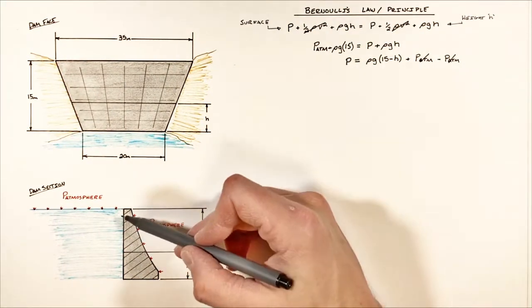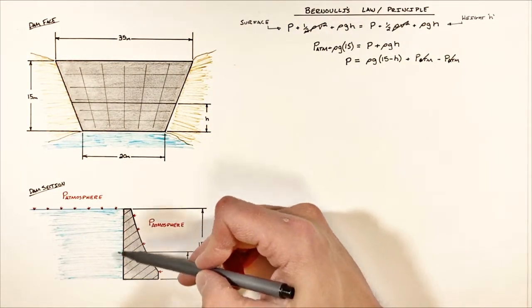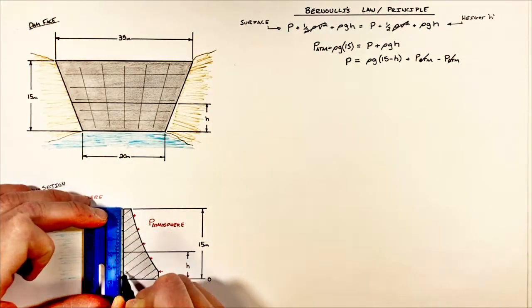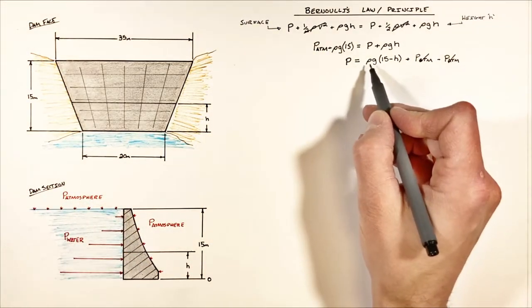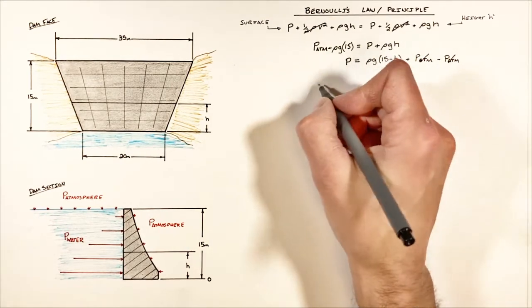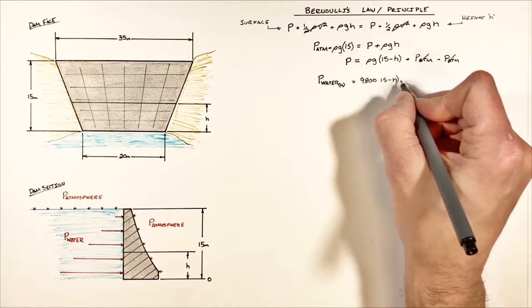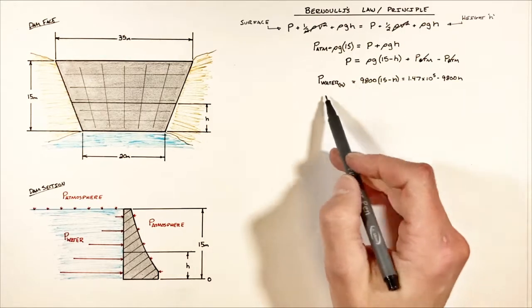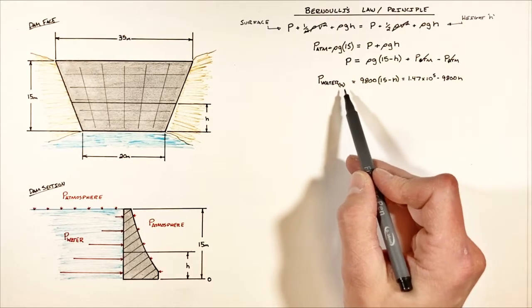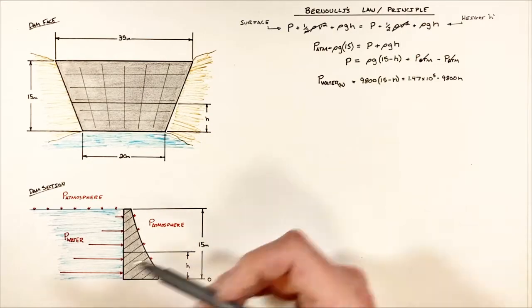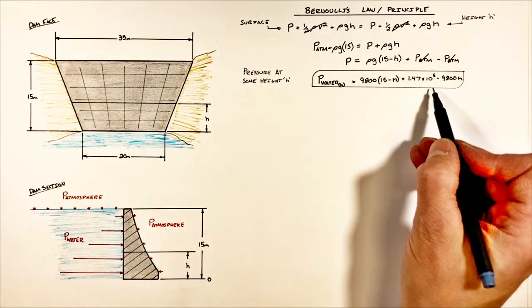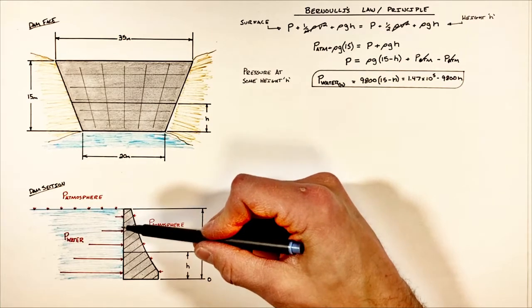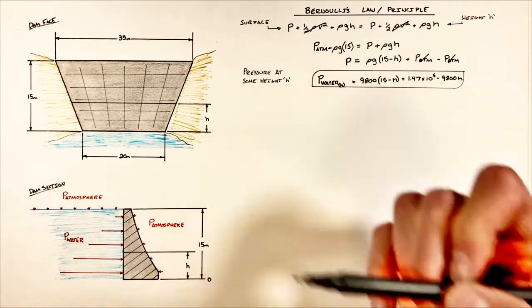So now we have an expression for the pressure exclusively by the water against this dam face. Plugging in our values for density and gravity into this function, we get an expression for the pressure by the water as a function of the height above our reference height. Really all this is saying is as we move down the dam face, the pressure by the water is increasing.